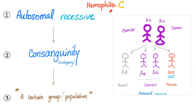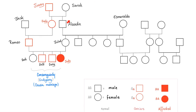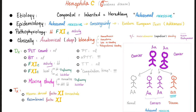Hemophilia C is not X-linked recessive; it is autosomal recessive — therefore, consanguinity is a factor. It is going to be more common in certain populations; in the case of hemophilia C, it's Eastern European Jews, or Ashkenazi Jews. Consanguinity is one of the factors associated with autosomal recessive diseases. The pathophysiology involves a problem with factor 11. The clinical picture — deep bleeding — is the same; just substitute factor 11 for factor 8.